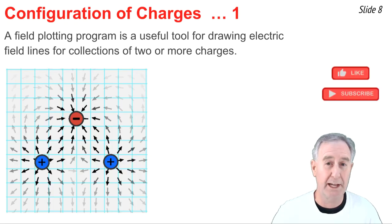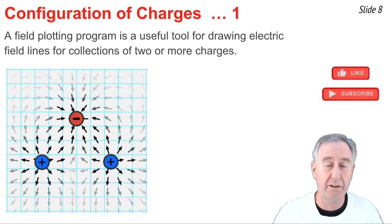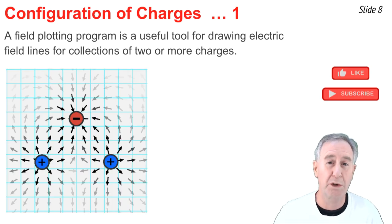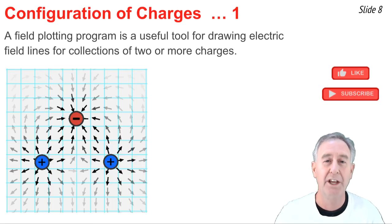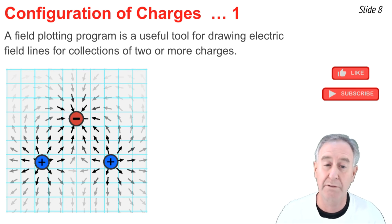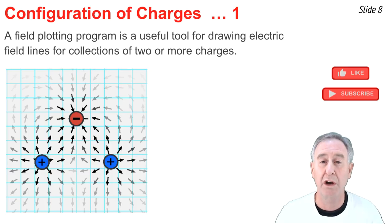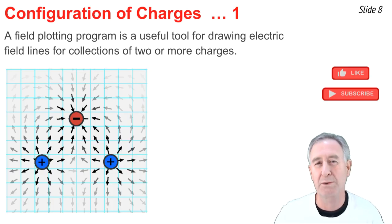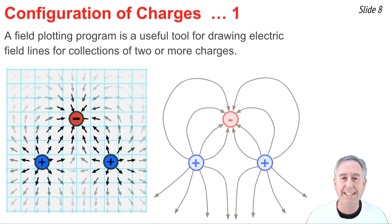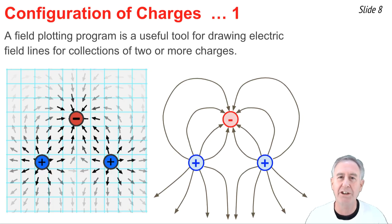So far we've seen electric field line patterns for simple, single source charges. But if you had a collection of two or more charges, you could draw electric field lines as well. It's often useful to have a field plotting program for such situations, such as the electric field line plotter on our website. You'll notice it draws lines of force around three charges as configured. Converting this to an electric field line diagram, you draw continuous lines of force from a positive source to a negative source, from positive sources towards infinity, or from infinity towards negative sources — and it might end up looking something like this. Comparing the two diagrams, they should look very similar to one another.